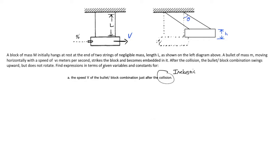In an inelastic collision, the objects stick together or, as in this case, become embedded in each other. We cannot use energy conservation here. Fortunately, we can use conservation of linear momentum in the x-axis, which applies because all motions are along the x-axis — including the bullet moving horizontally, and the combination which, immediately after the collision, can be considered to be moving along the x-axis.